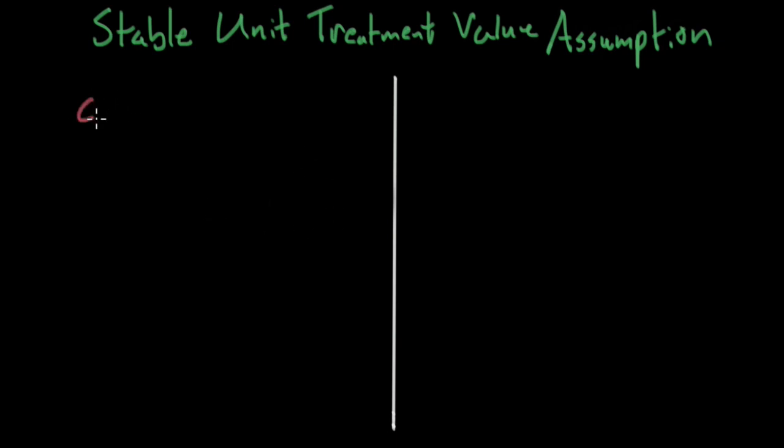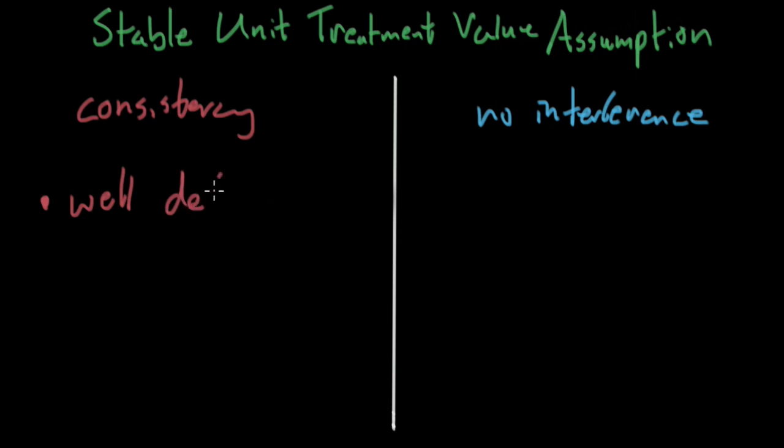The two assumptions are one is consistency and the other one is no interference. Let me go ahead and explain both of these assumptions. So the consistency assumption is, again, it's almost too obvious. But the assumption is well-defined treatments. And if you don't have well-defined treatments, you basically can't perform causal inference. So what do I mean by a well-defined treatment?